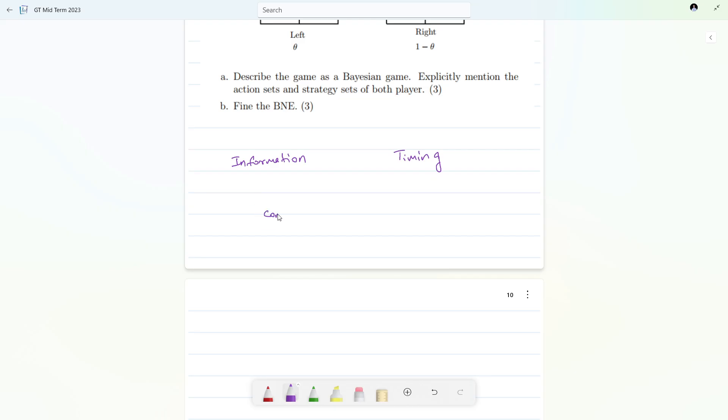If I talk about information, if it is complete information or incomplete, and if I talk about timings, then it can be simultaneous move game - simultaneous means both players are moving simultaneously, one just after another without seeing the other player's strategy - and it is sequential.